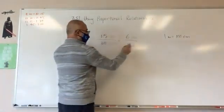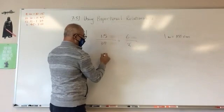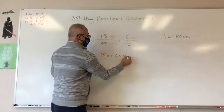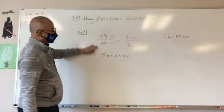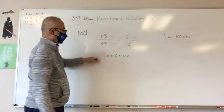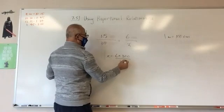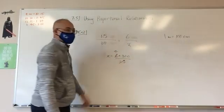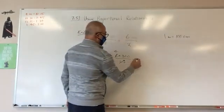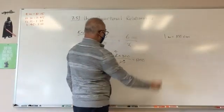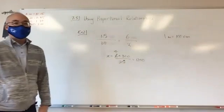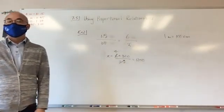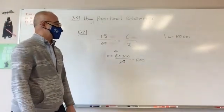So we're just going to cross multiply. So I get 1.5x is equal to 6 times 300. Divide both sides by 1.5. There are four of these in six. 1,200 meters.